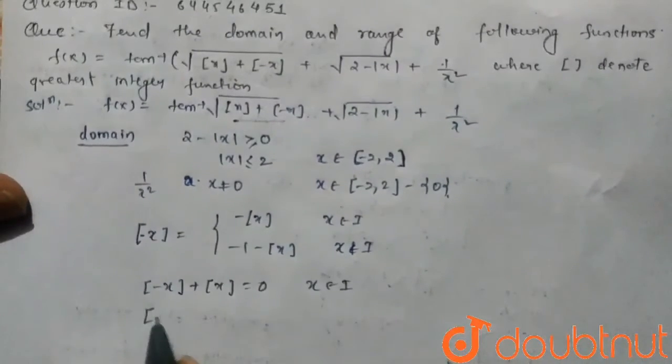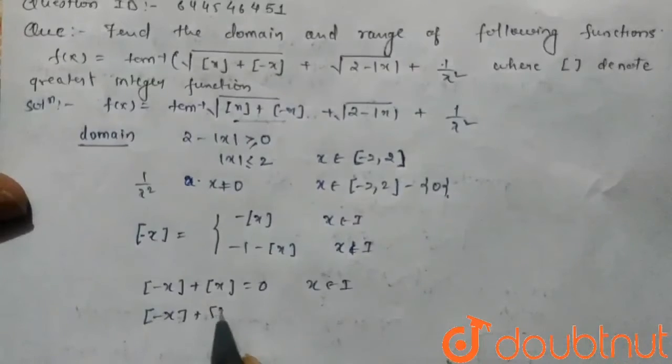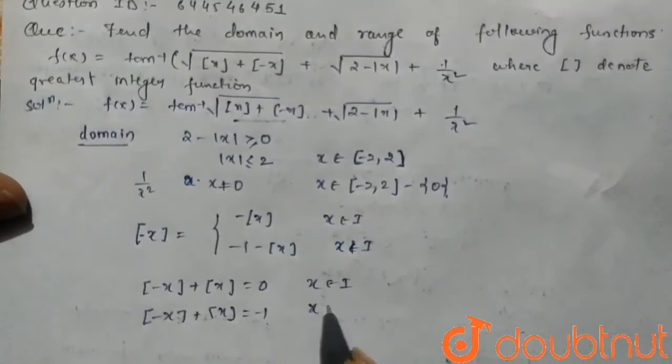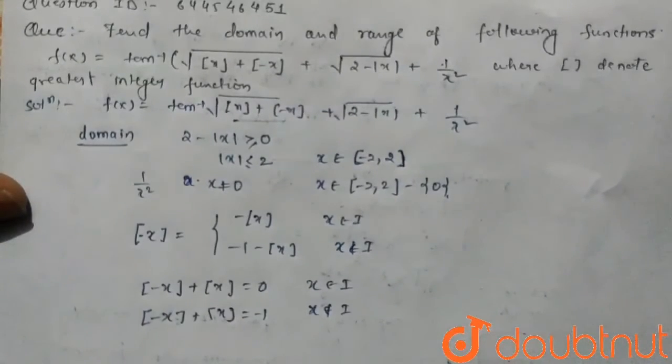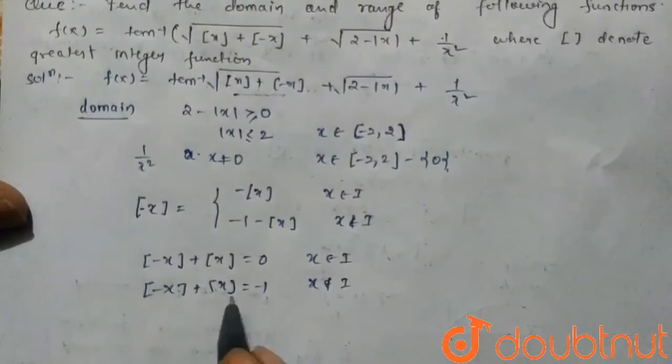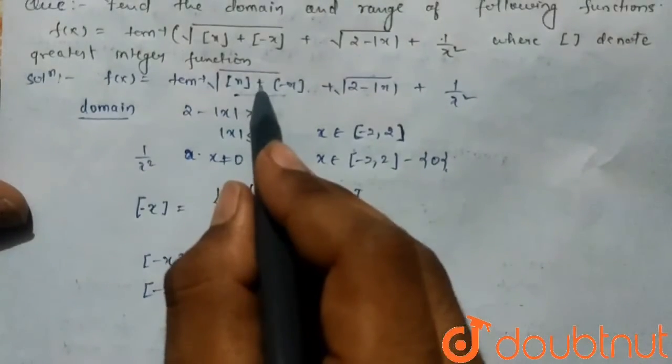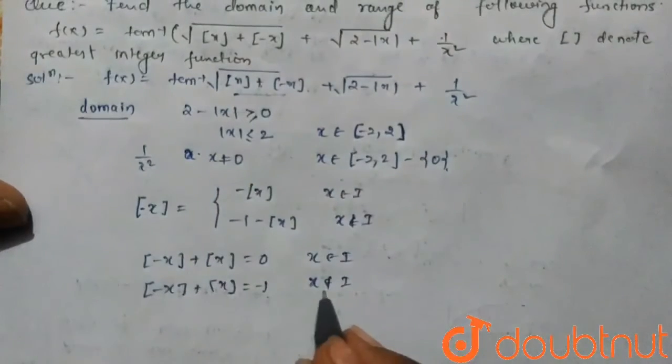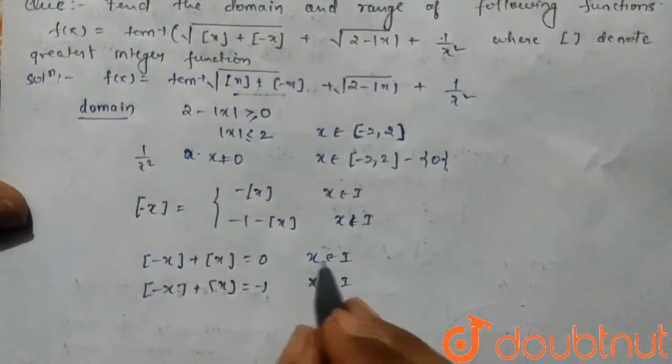It means the value of [x] plus [-x] equals to zero for x belongs to integer, and [x] plus [-x] equals to minus one when x is not integer. So for non-integer value this is negative, and in root it is not possible. So in domain we do not accept the non-integer values, we accept only integer value.